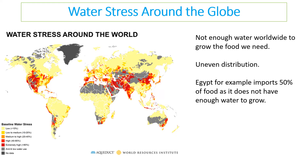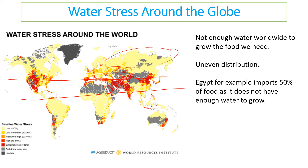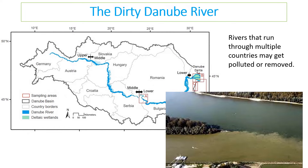Water stress is not equal around the world — there is a very uneven distribution, and this can directly impact water availability or crop production. Some parts of the world have very low water stress, for example Russia and cold snowy areas shown in yellow. High levels of water stress are found around the equator, where temperatures are hotter due to greater exposure to the sun.